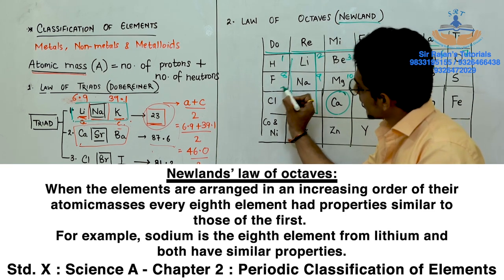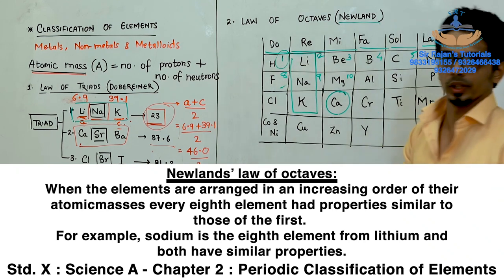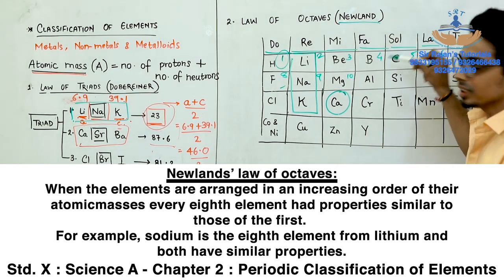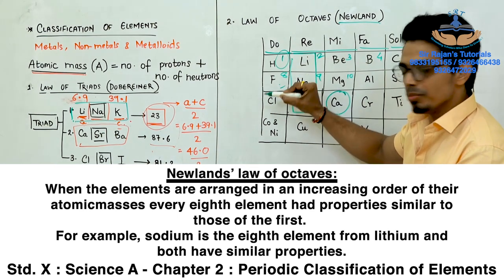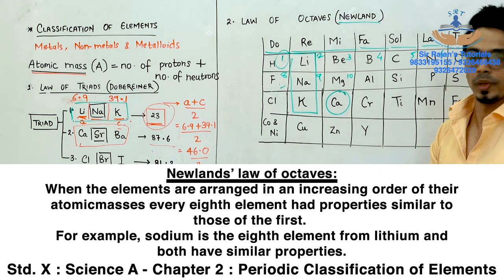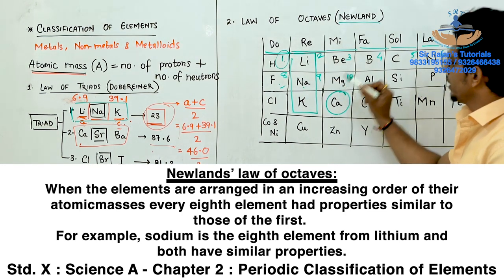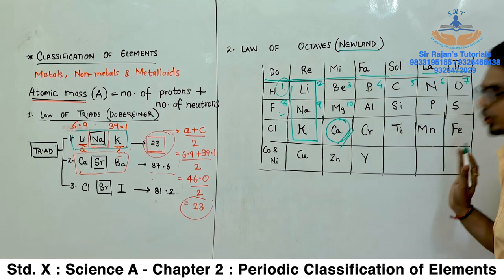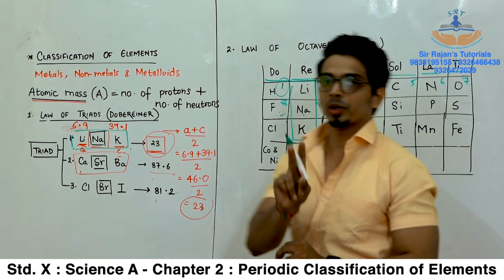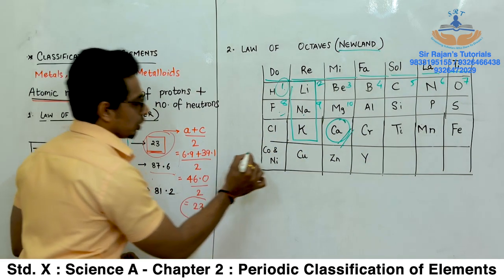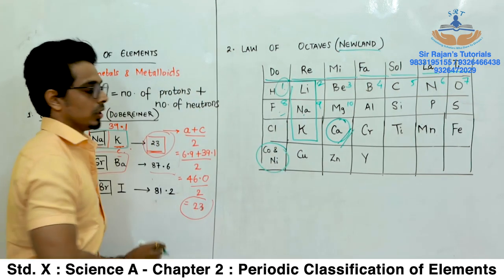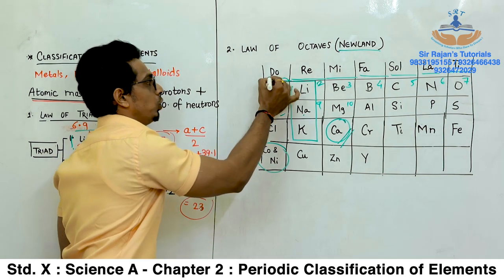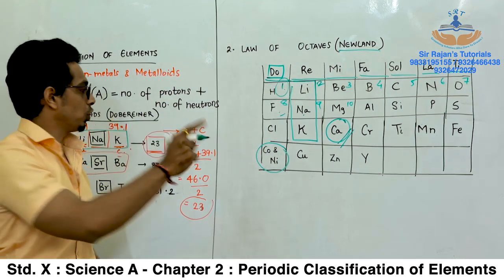When he was trying to place all these elements in table form, he arranged them in increasing atomic mass and also looked at physical and chemical properties. Based on this, he made something known as the periodic table. Mendeleev's periodic table has something known as groups and something known as periods. Groups are columns, and columns are vertical. Periods are nothing but rows, and rows are horizontal. Based on that, he was successful in classifying the 63 elements. Do not forget: vertical columns are groups and horizontal rows are periods.